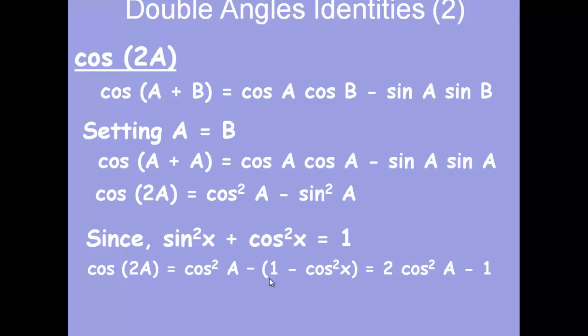So for example, if we substitute in 1 minus cos squared for sin squared, we end up with this, just in terms of cos. And if we do a similar thing, substituting in 1 minus sin squared for cos squared, we get 1 minus 2 sin squared.